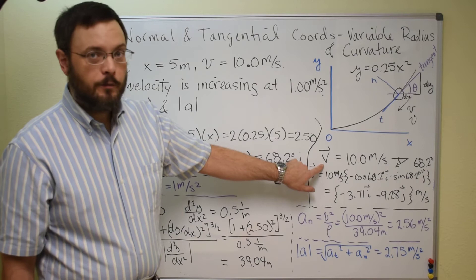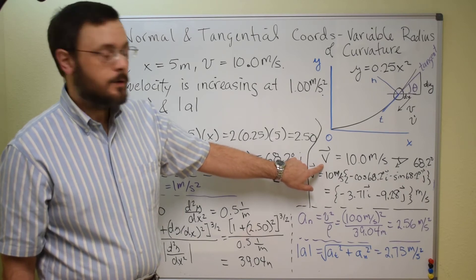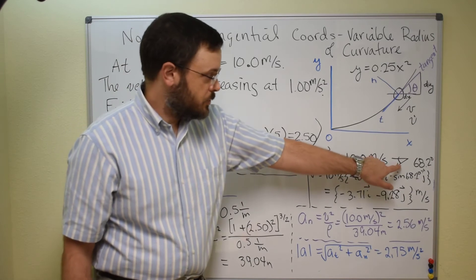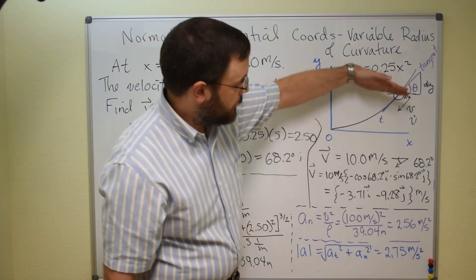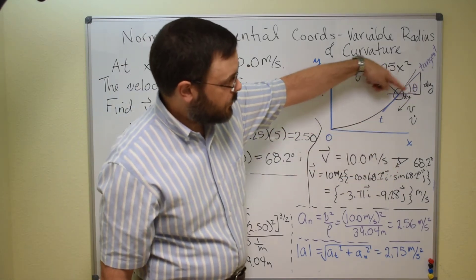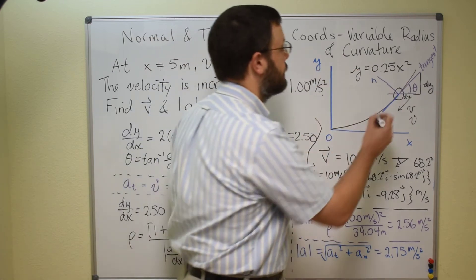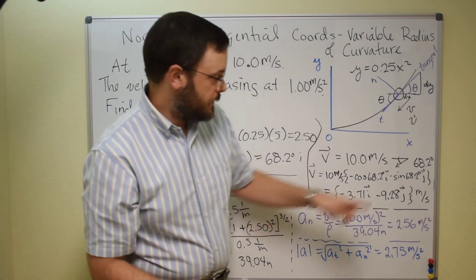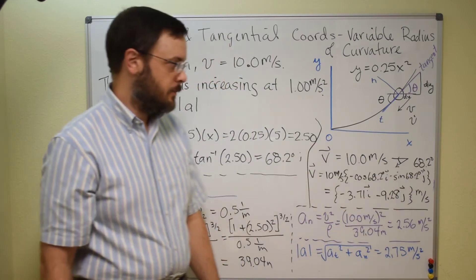Then we can write velocity in terms of magnitude and direction, so velocity is 10 meters per second, and then show that it's, if this is theta over here, then this angle here must also be theta, so show that this angle here is 68.2 degrees.